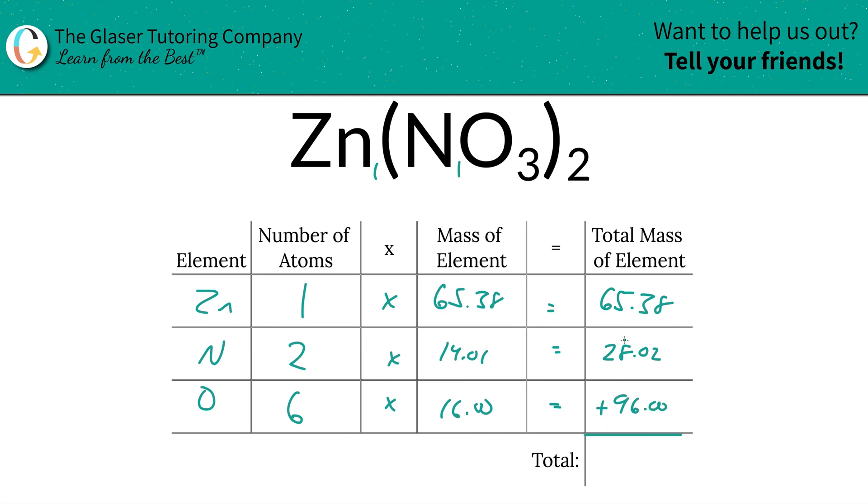And then to find the total mass of the entire compound, just simply add up all the total masses of all the individual elements. So this is going to work out to be 189.40. And the units there are going to be in terms of AMU atomic mass units. That's because we're finding the molecular mass. That's all there is to it.